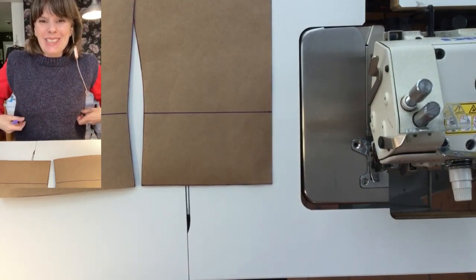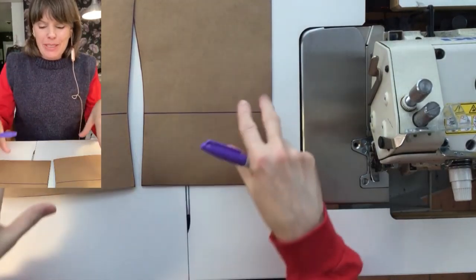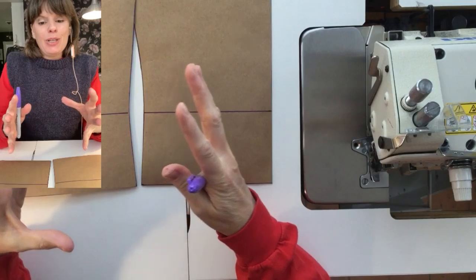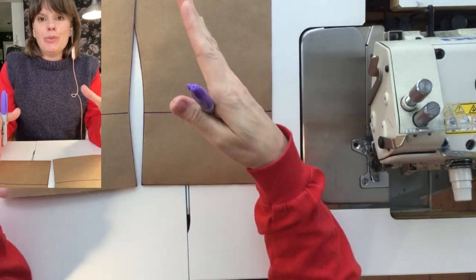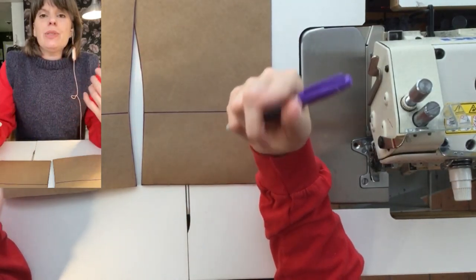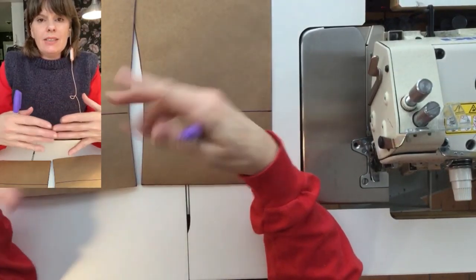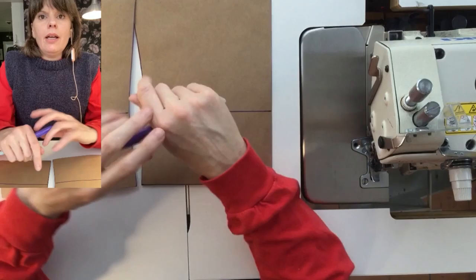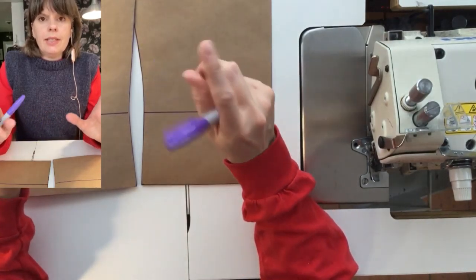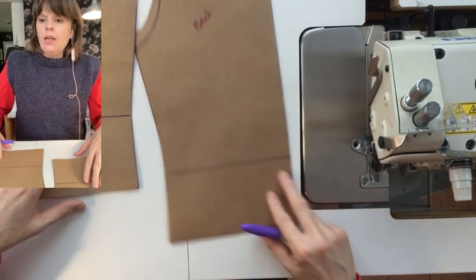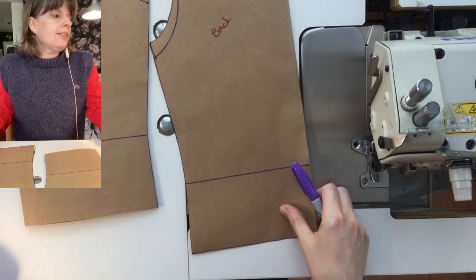Cut a waistband, basically an under bust band that's slightly smaller than the bottom of the binder and you would serge it on with a mesh underlay and that would give that sort of sports bra look to something that's like a stealth binder.